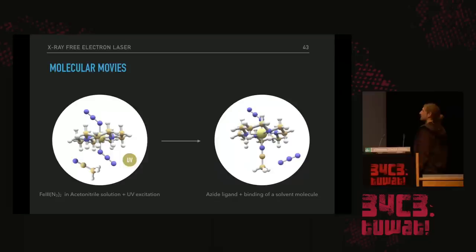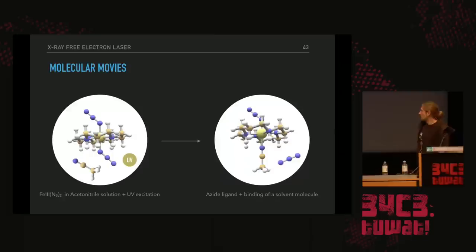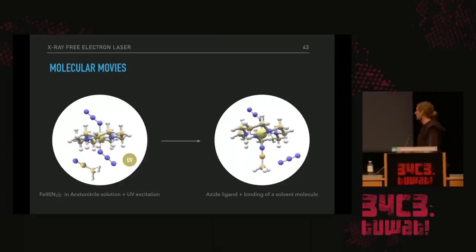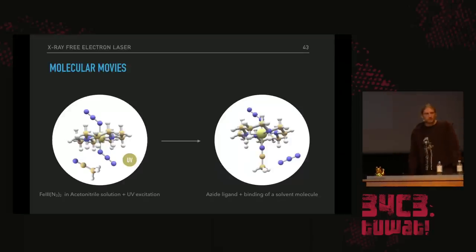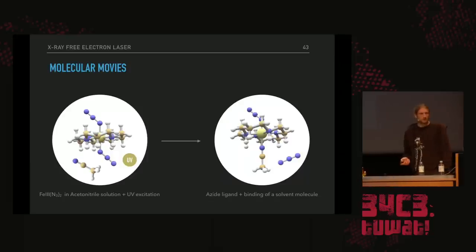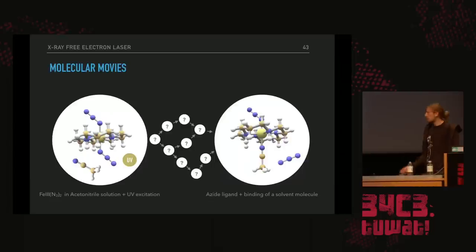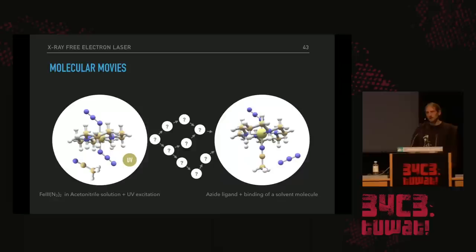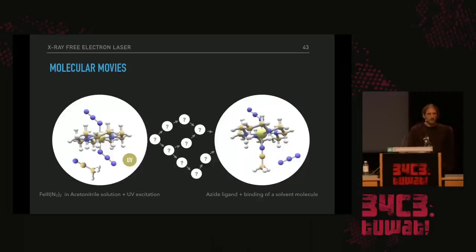I would like to close this talk with a unique application you can only do at these free electron lasers: molecular movies. For example, this iron complex in acetonitrile solution — if you hit it with a UV laser, it performs a chemical reaction leading to an acid ligand and the binding of a solvent molecule. This is chemistry we have known for many decades. But basically all our knowledge of chemistry is equilibrium science: we know the reactants and the reaction products, but we don't know what's happening in between. Usually there is not only one reaction path but many with different probabilities. If we don't know what's happening in between, it's very hard to design a drug or a catalyst. With the XFEL we can do this.